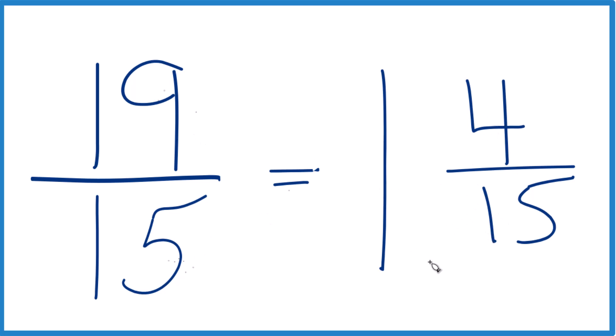And you can check that because 1 times 15, that's 15. 15 plus 4, that's 19. And we just keep the denominator the same.